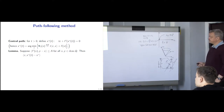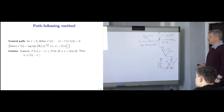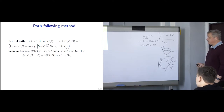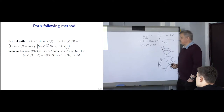From the first-order optimality condition, the gap — the difference of the objective function at x* minus the optimal value — equals (1/t) times the inner product of the gradient and the displacement, which is bounded by a/t. So we can guarantee that for large values of the penalty parameter, the values along the central path are close to the optimal value.